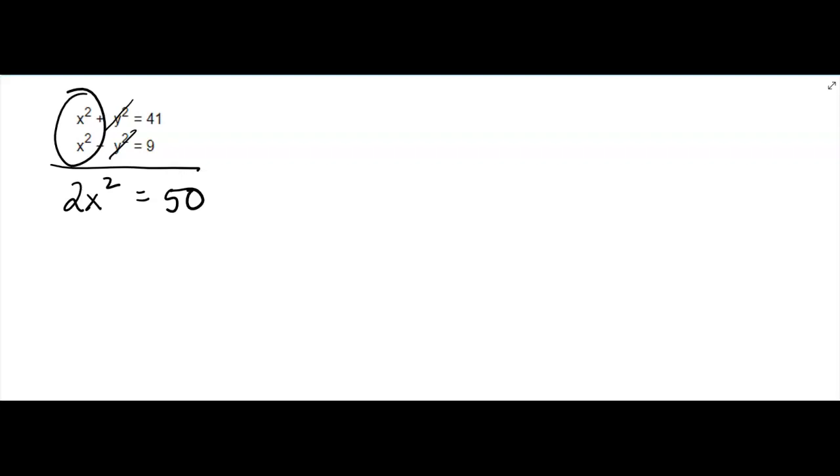Divide by 2, so x squared equals 25. Then take the square root of both sides, plus or minus. So you get x equals plus or minus 5. But just to continue, maybe you have another question.